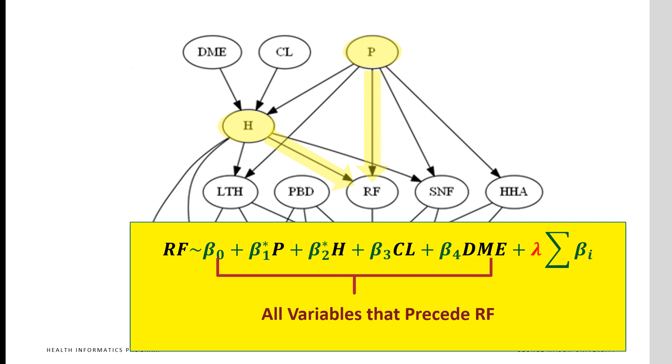LASSO regression can be used to detect the parents. This provides the equation of LASSO regression of RF on all variables that occur prior to it. These include P, H, CL, and DME.